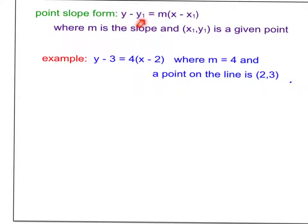Point-slope form is y minus y sub 1 equals m times x minus x sub 1. An example would be y minus 3 equals 4 times x minus 2, where we can pull out our slope, which is 4, and our point 2 and 3.